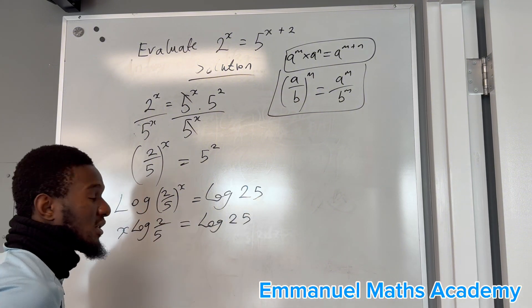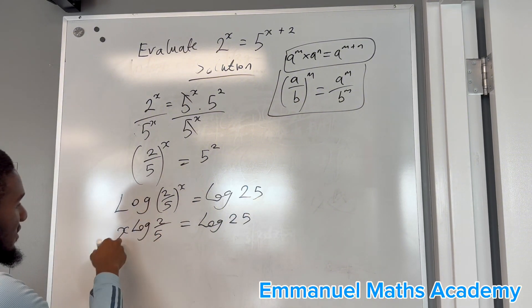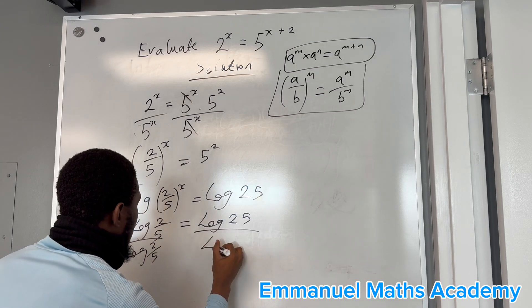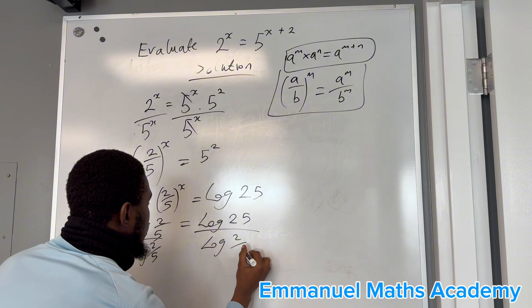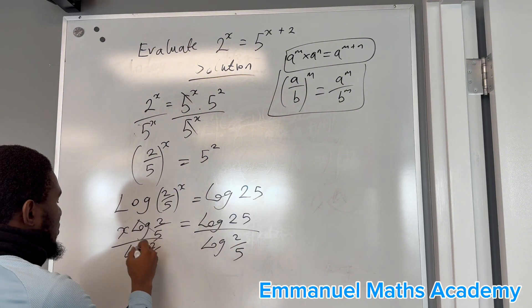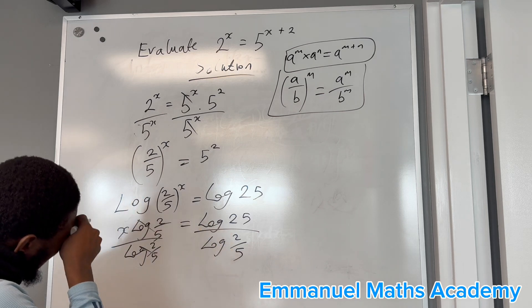Making x the subject of the formula, you divide both sides by the coefficient log of 2 over 5. This will cancel, hence x equals log 25 over log of 2 over 5.